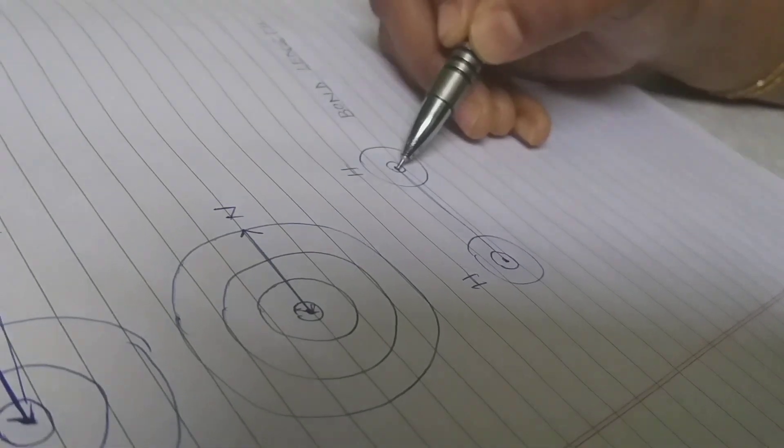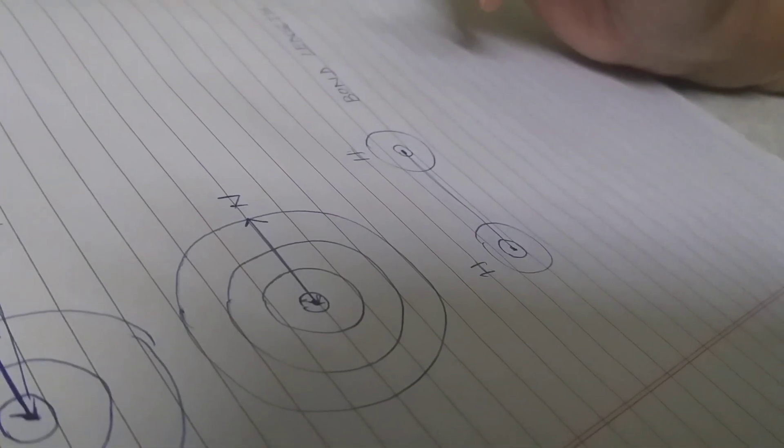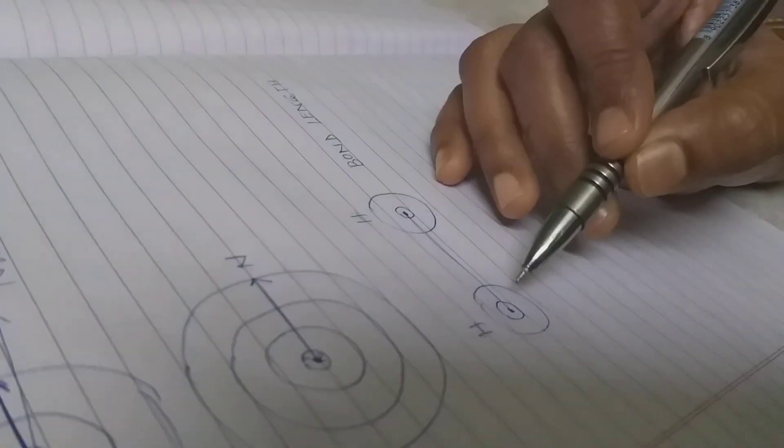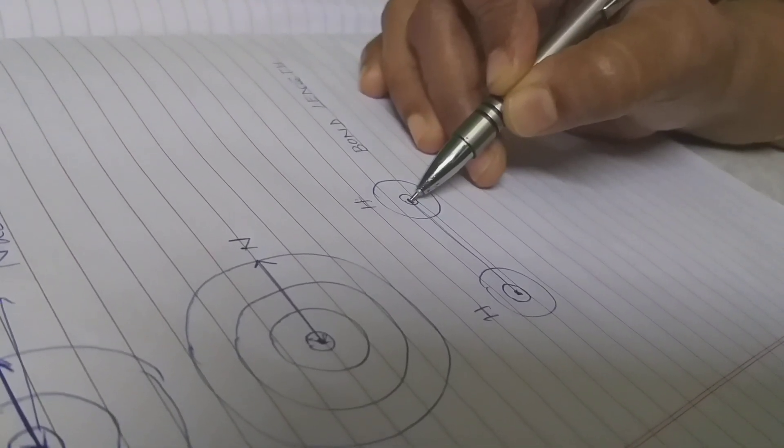This is the distance between the center of two nucleuses of a same element is known as a bond length. Now we will go to the periodic table. How this is affecting? We are supposed to learn about the effect of the property, how it is varying in period and groups.